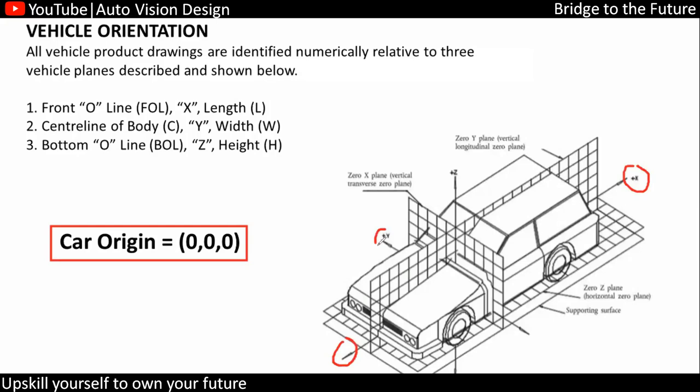For this particular vehicle, the X-axis will be along the length of the vehicle, the Y-axis will be along the width of the vehicle, and the Z-axis will be along the height of the vehicle. This is how the XYZ axes are positioned for the vehicle.